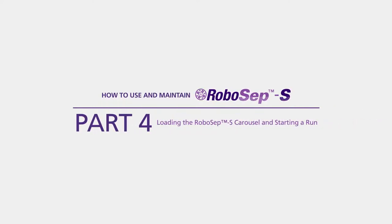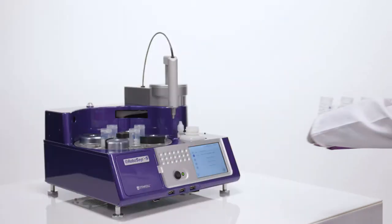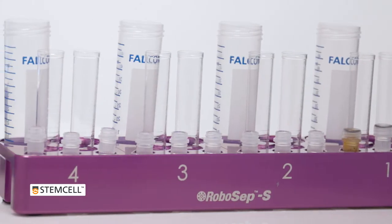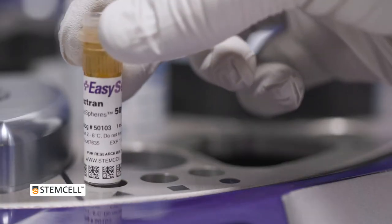Part 4: Loading the RoboCEP Carousel and Starting a Run. RoboCEP S comes with a RoboCEP service rack to hold and organize reagents and sample tubes prior to loading them onto the carousel.